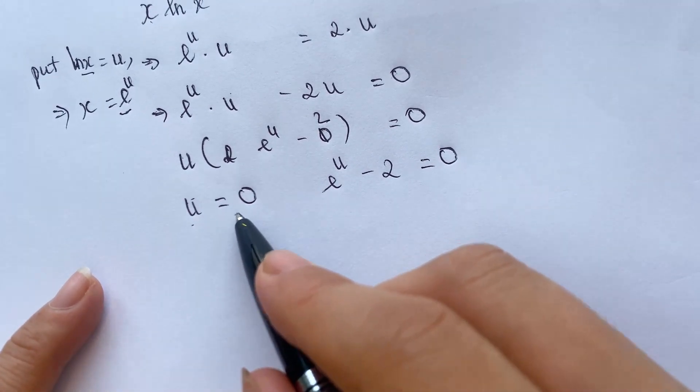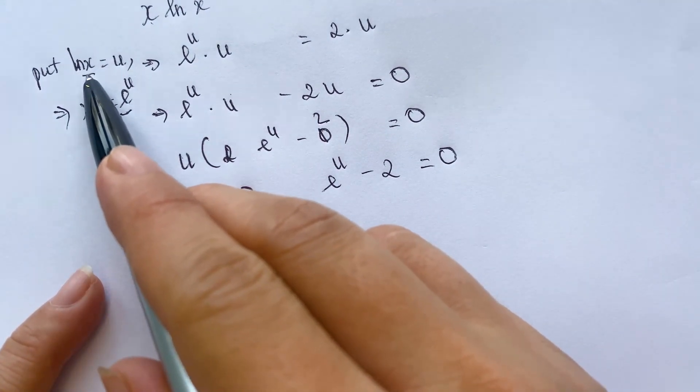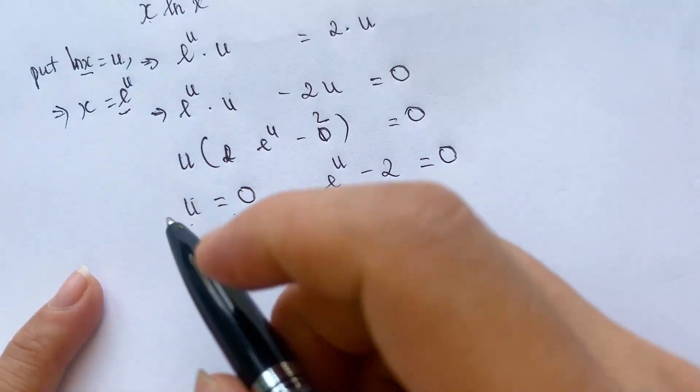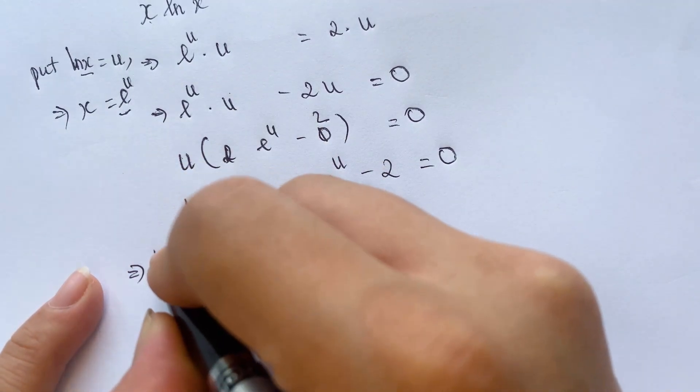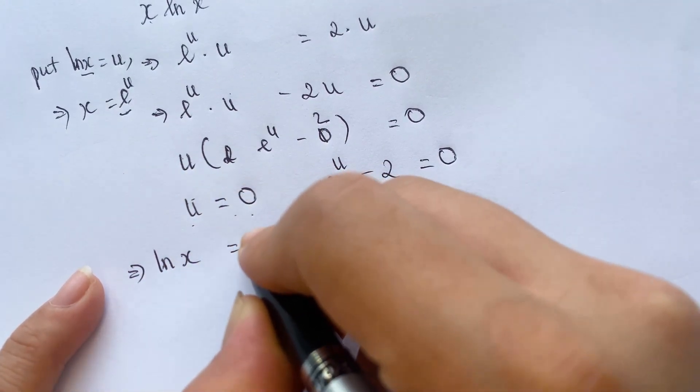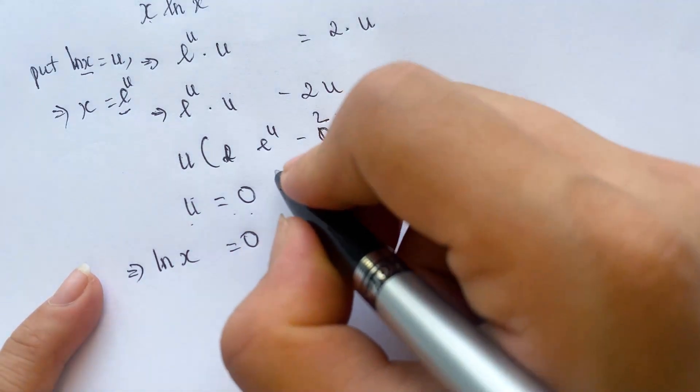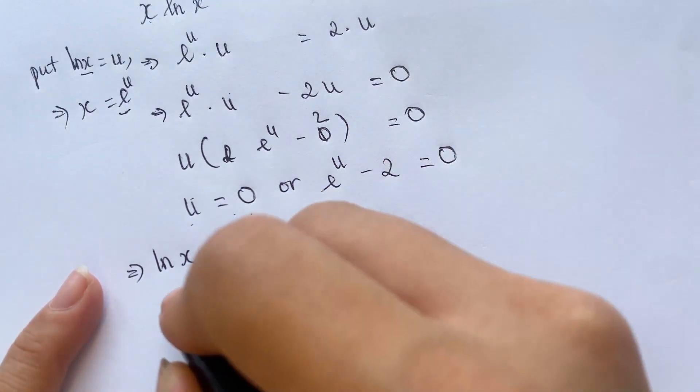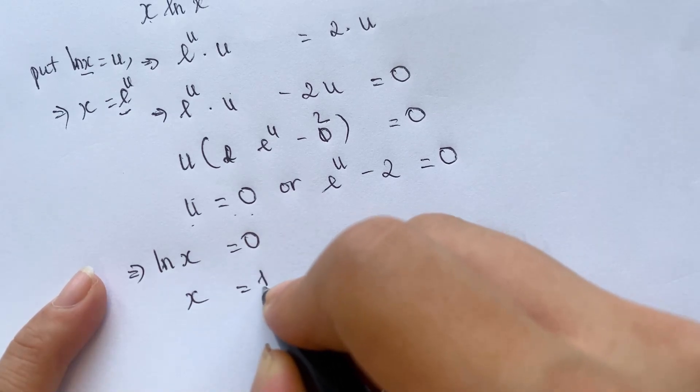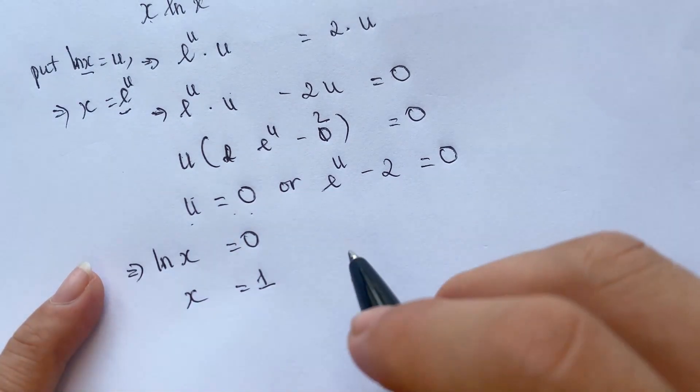For first, u equals 0. It means that natural logarithm of x equals 0. And so x equals 1.